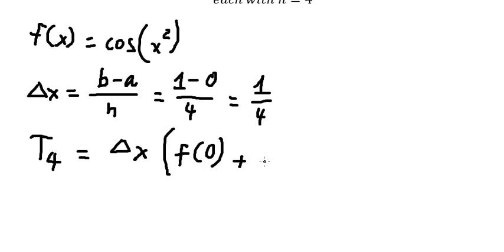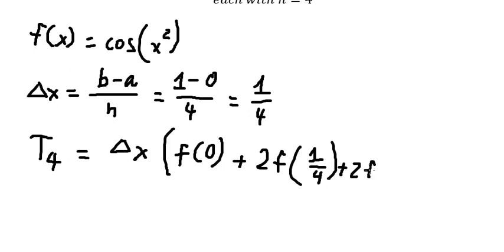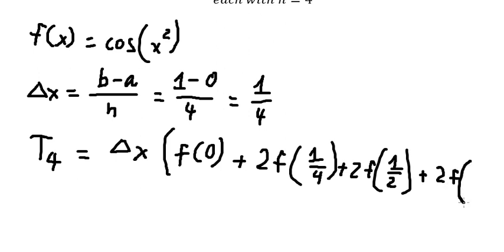On the next one we need to add 1 over 4, so we put 1 over 4. Then we add another 1 over 4, so we have 1 over 2. The next one is 3 over 4, and if we add 1 over 4 we have number 1, so we just have f of number 1.